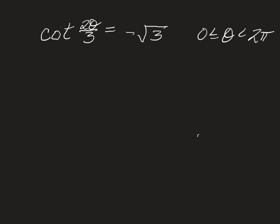The first thing we do when we solve this is we get 2θ/3 equals the inverse cotangent of negative square root of 3. So once we get to a trig function equals a number, we take the inverse of each side. Now, what's the inverse cotangent of negative square root of 3?